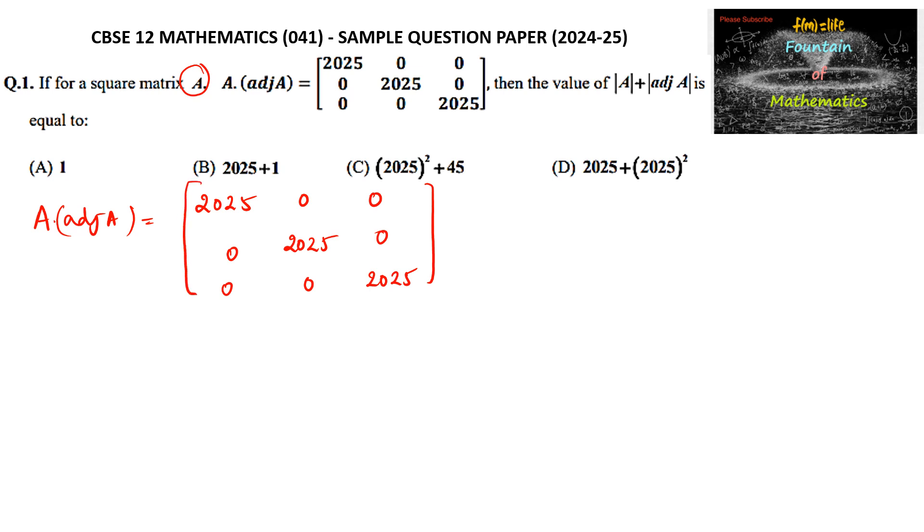We can just consider 2025 common and we can write 1, 0, 0, 0, 1, 0, 0, 0, 1, which is an identity matrix of order 3. So we can write 2025 into identity matrix with order 3.